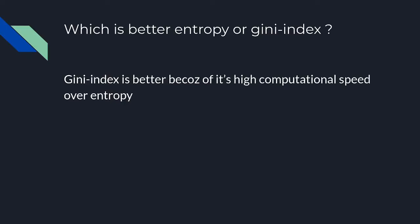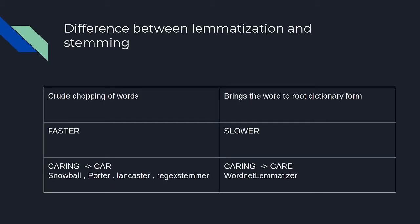Next question: what is better — entropy or Gini index? Gini index is better because it is computationally more efficient than entropy. In entropy you calculate the logarithm, while in Gini index you do not, which is why computation is faster.